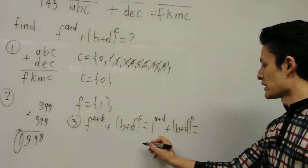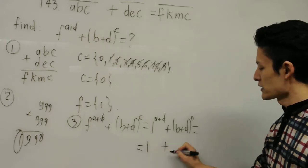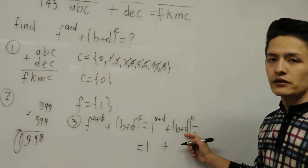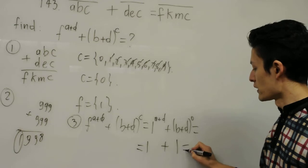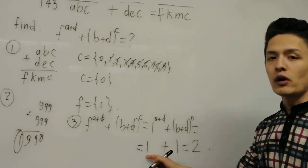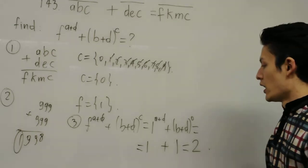And now 1 to the A plus D is equal to 1 plus this thing, B plus D to the 0, is equal to, of course, 1. And now the final answer is 1 plus 1, which is 2. And so this is the answer.